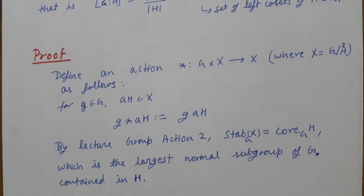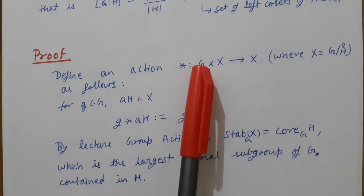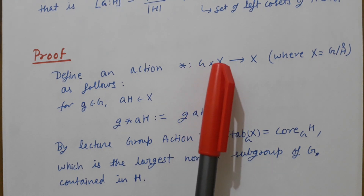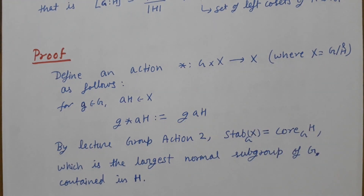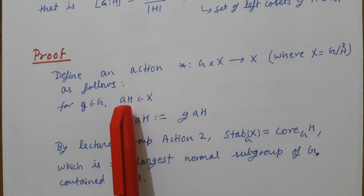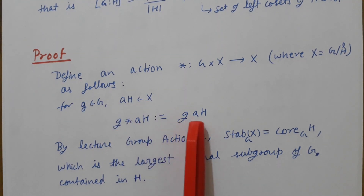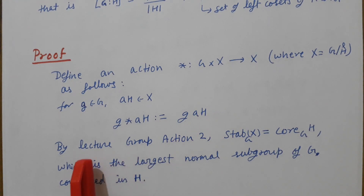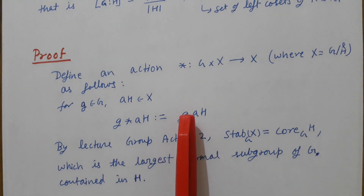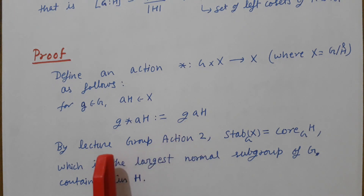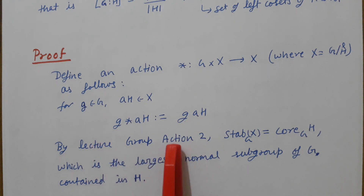The action is defined as follows: take a g in G and aH in X, then g star aH is defined as gaH. We have shown in Lecture 1 that this is indeed an action.